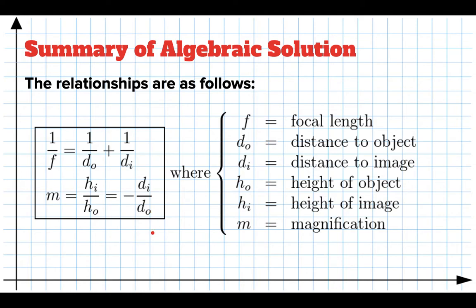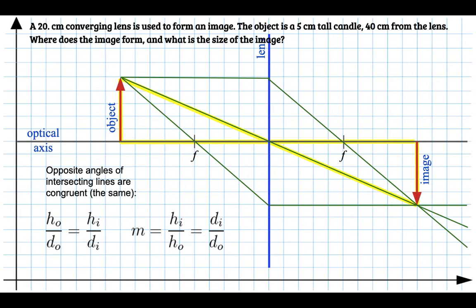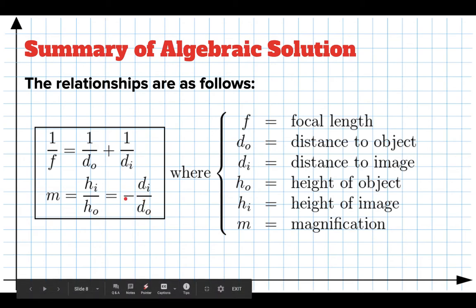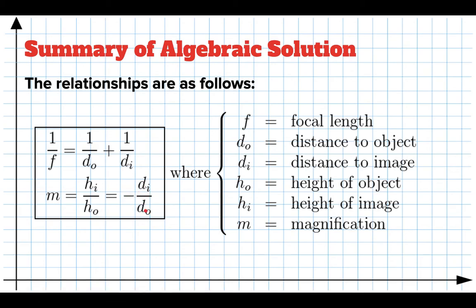Pause the video and write these down in your toolbox because these are the important things we're going to use. There are two equations governing the relationships between quantities with lenses. The first is the lens maker's equation: 1/F = 1/d_o + 1/d_i, where d_o is the distance to the object, d_i is the distance to the image, and F is the focal length. The second is that magnification equals height of image over height of object, which also equals negative d_i over d_o. The negative accounts for the image being upside down.